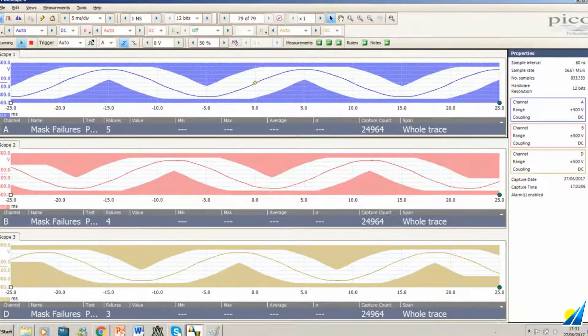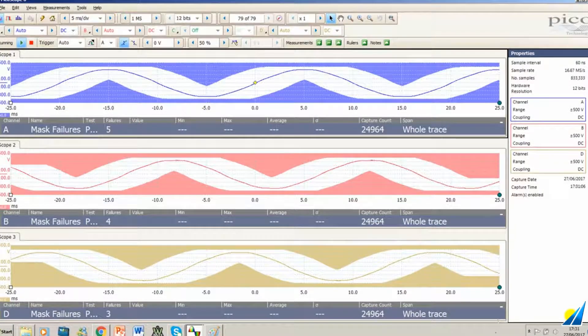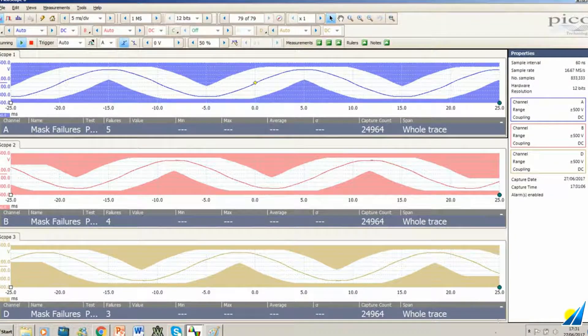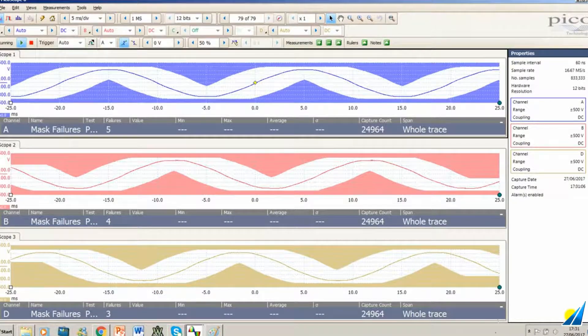On the screen in front of you what you can see is the three phases. So you've got the blue channel, channel A, the red channel, channel B, and the yellow channel, channel 3, symbolizing each phase of our power supply system.